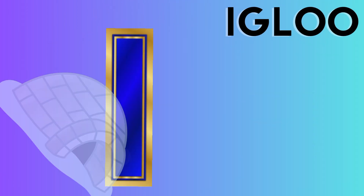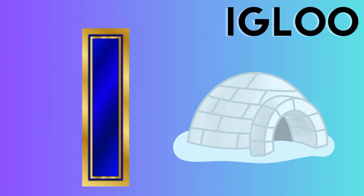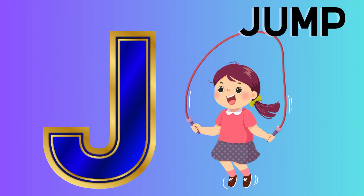I is for igloo, i-i-igloo. J is for jump, j-j-jump.